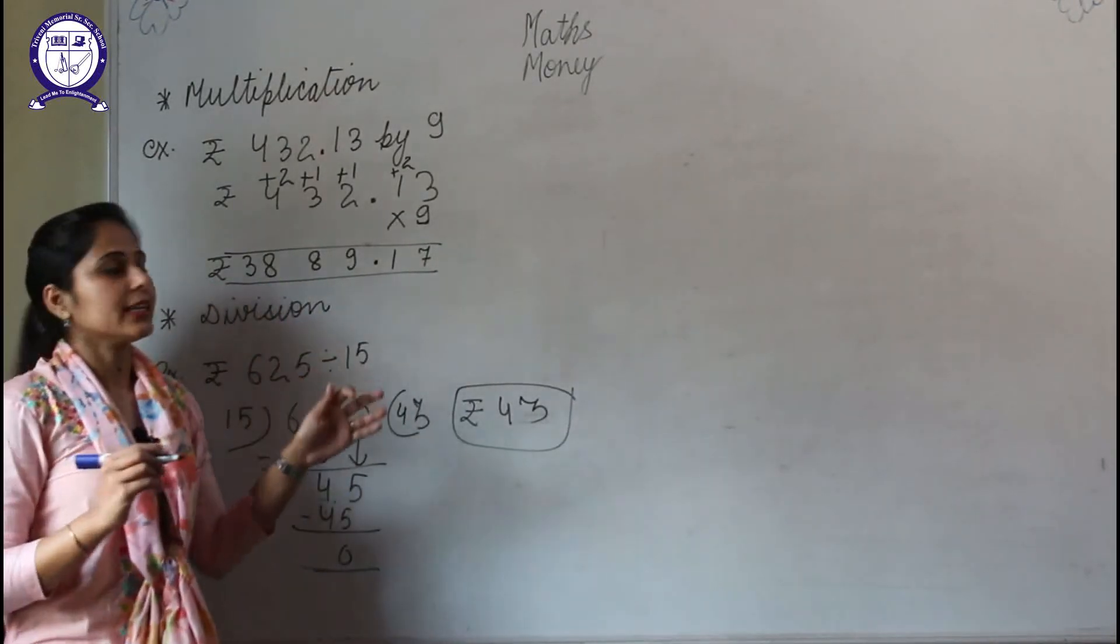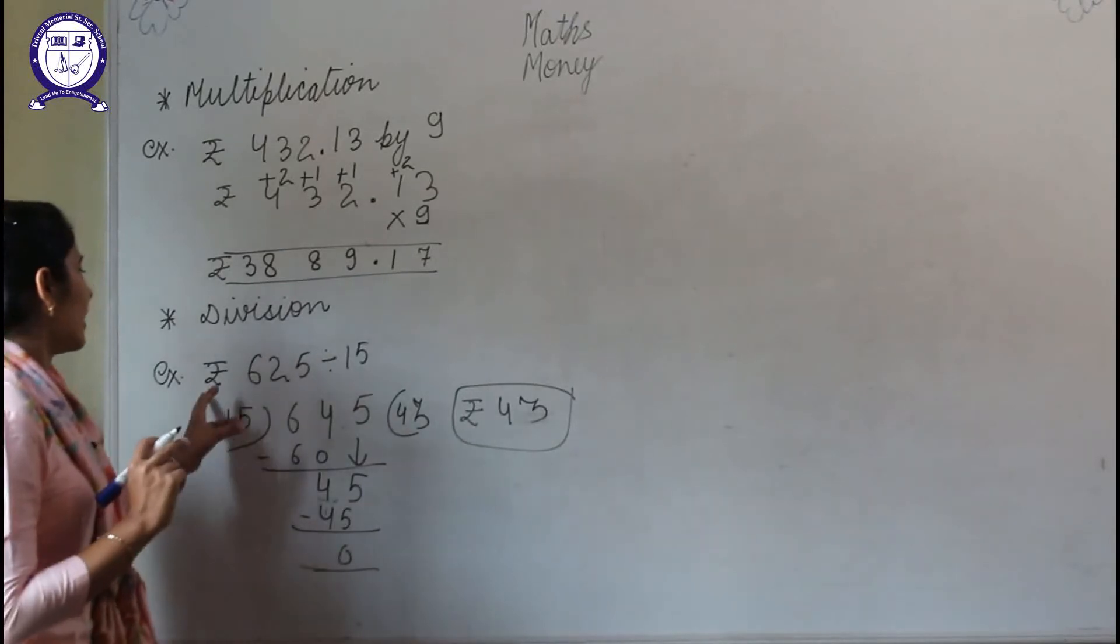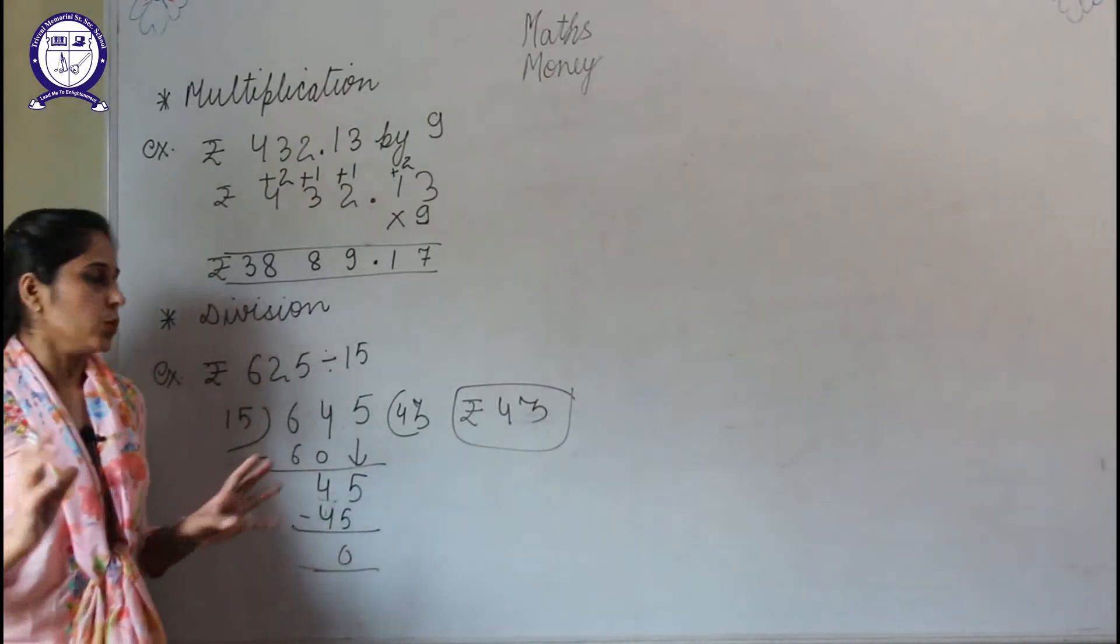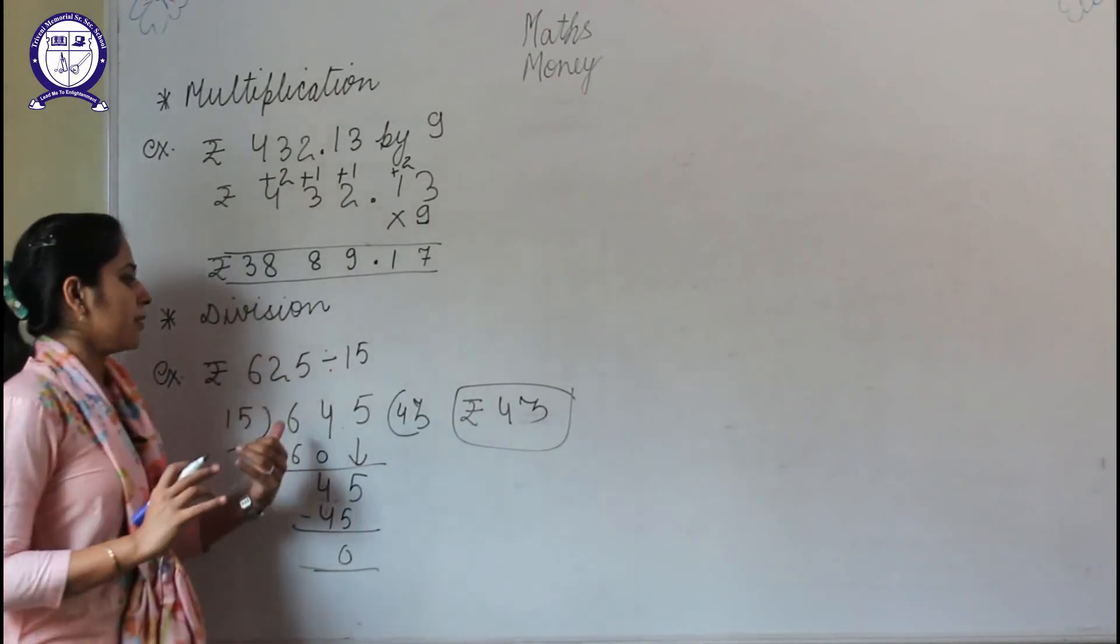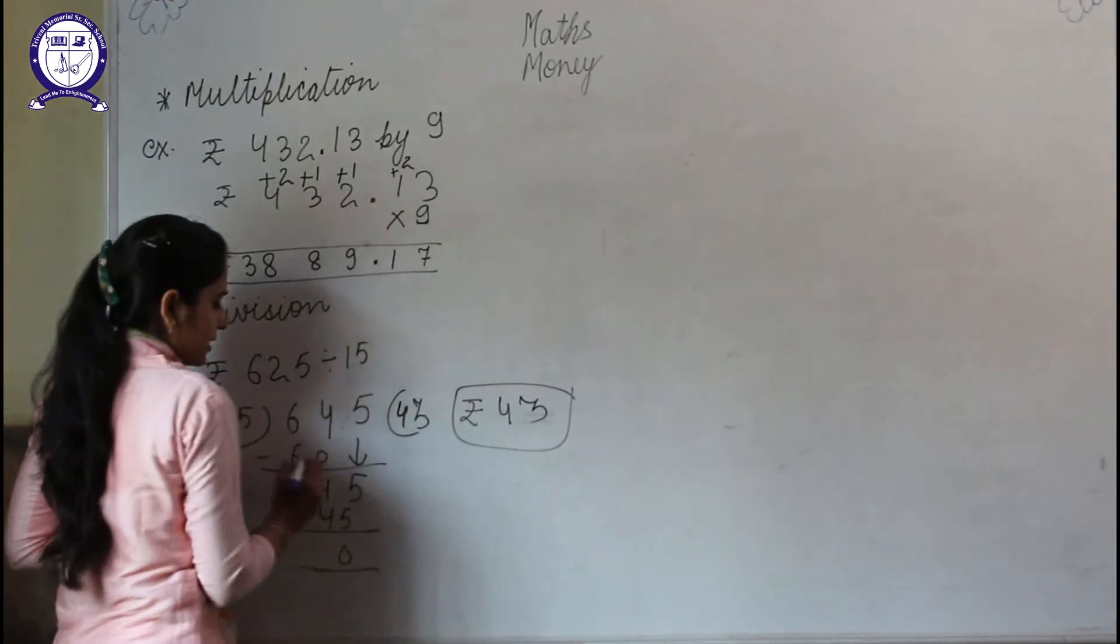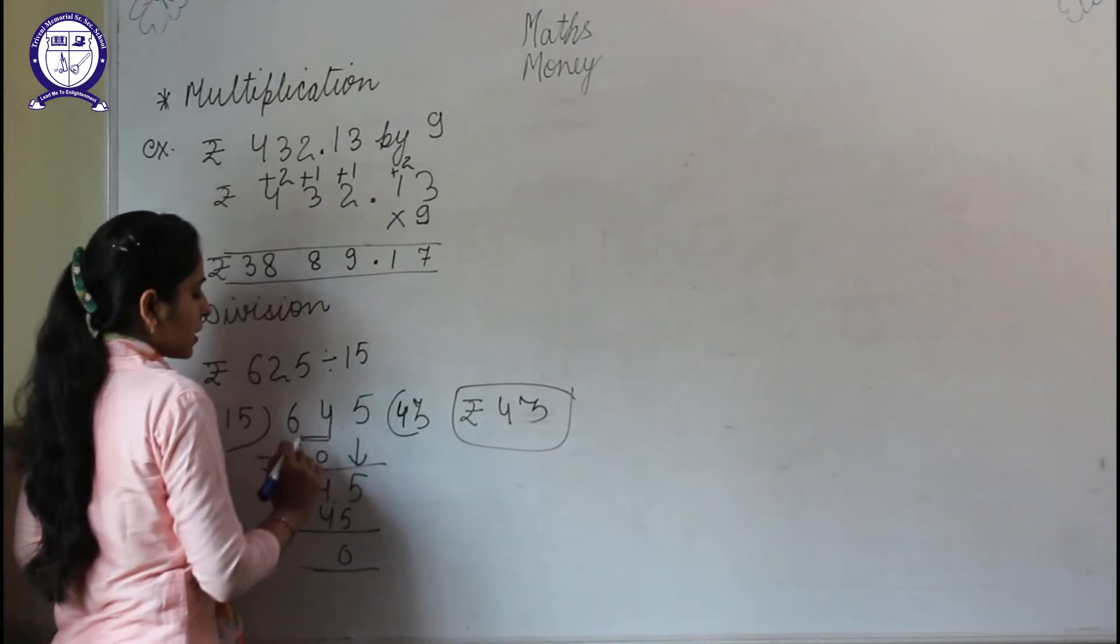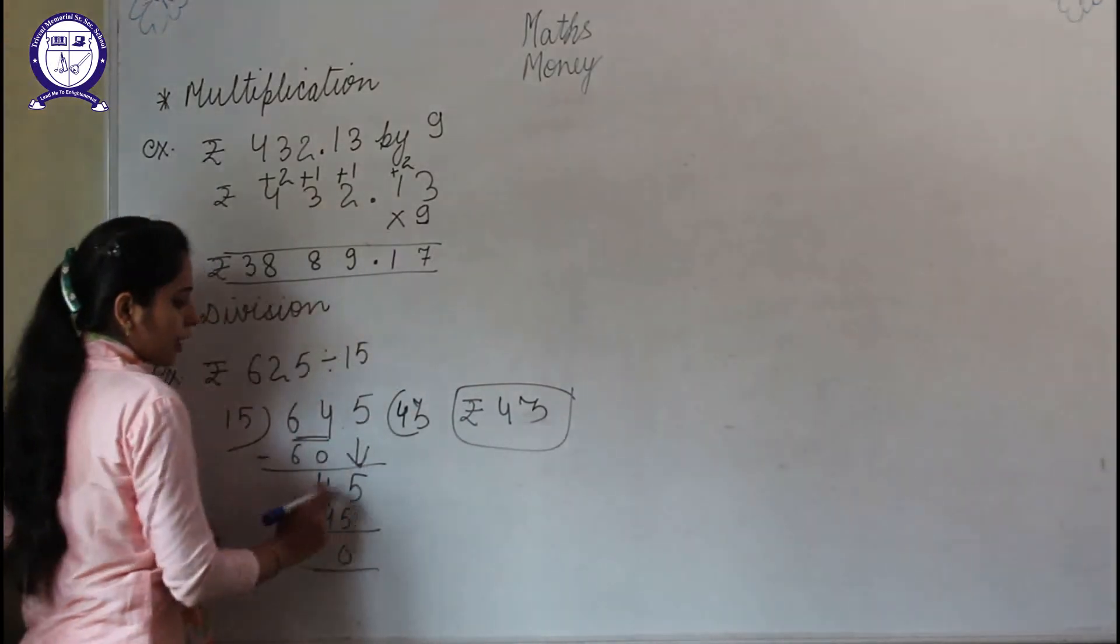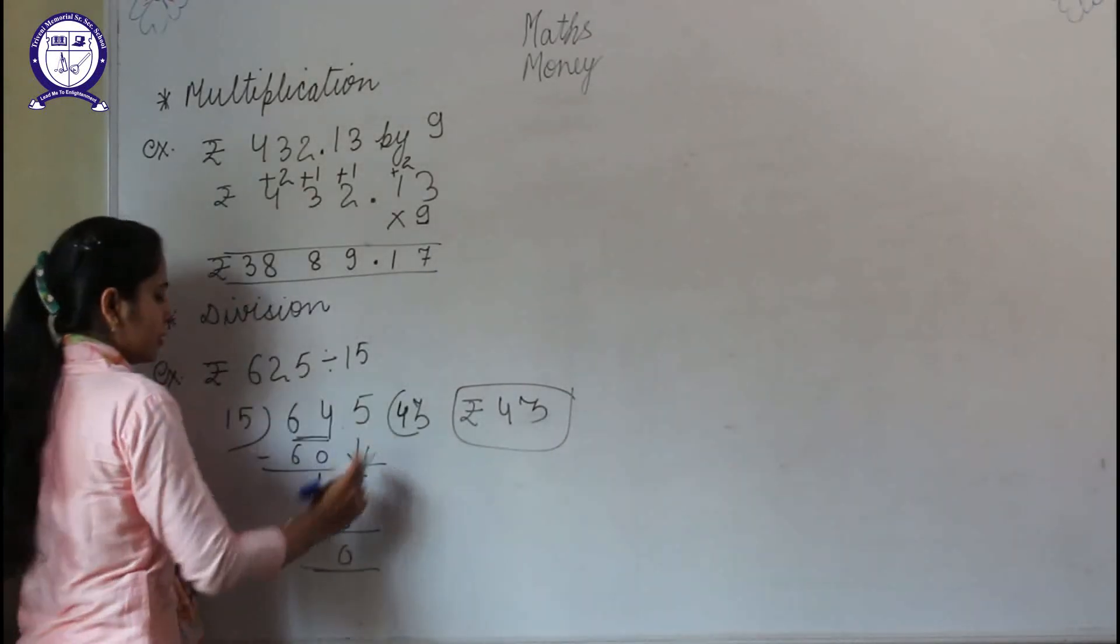and 17 paise. And how to divide? Here we are dividing 625 by 15. In the table of 15, at the place of 4, we have 60, because 64 does not come in the table of 15. So 64 minus 60 is 4, and we write the next number 5. So 45 in the table of 15 is at the place of 3. 15 times 3 is 45, 45 minus 45 is 0. So the answer will be ₹43.